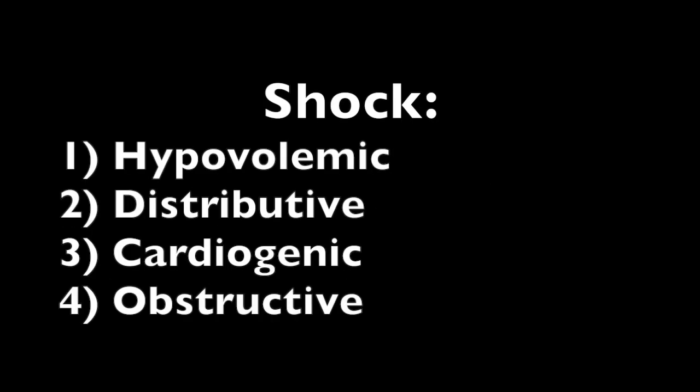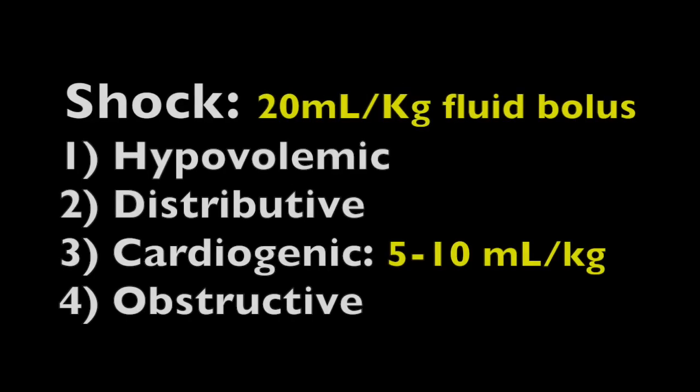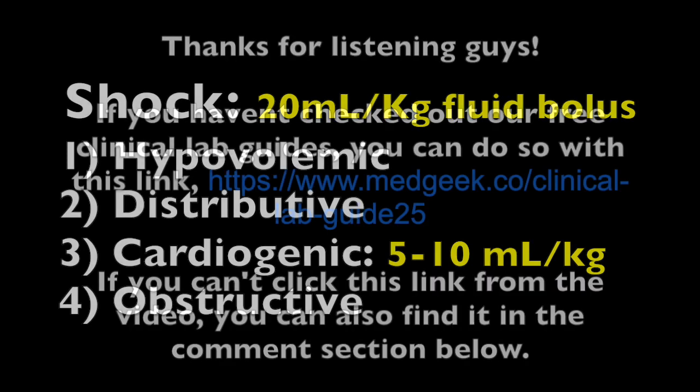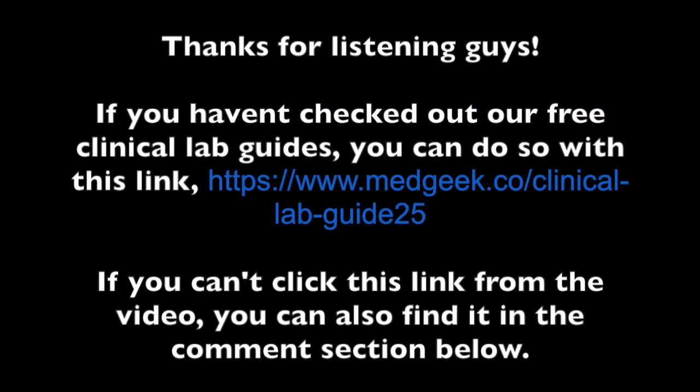PALS really likes to test the different types of shock in the pediatric population. When it comes to fluid boluses, most shocks get 20 mL per kg. But if it's cardiogenic shock, only give 5 to 10 mL per kg at a slow rate.